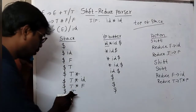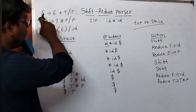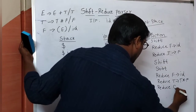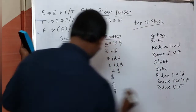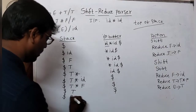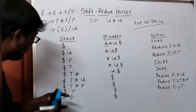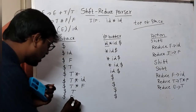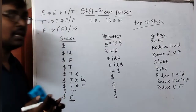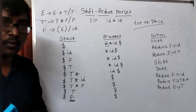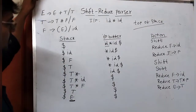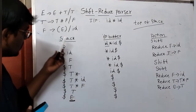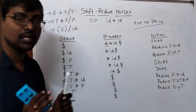We now have T on the stack. T appears in E → T, so we perform a reduce operation: E → T. Finally the stack is $ E. Since E is the starting symbol, there is no further extension possible. The bottom of the stack and the end of the input are both dollar, so the string is accepted. This is how we construct a shift-reduce parser.